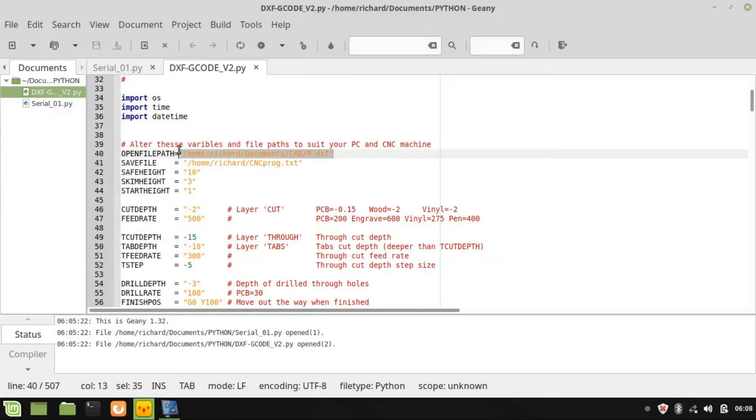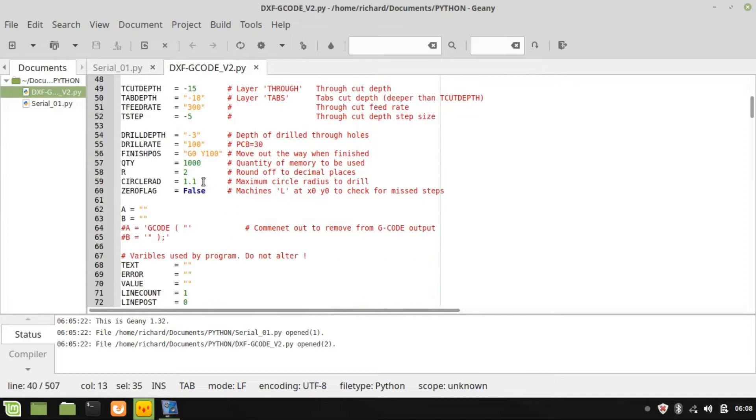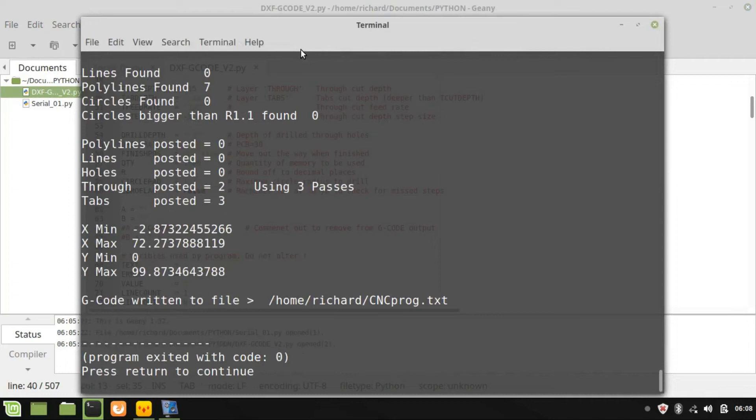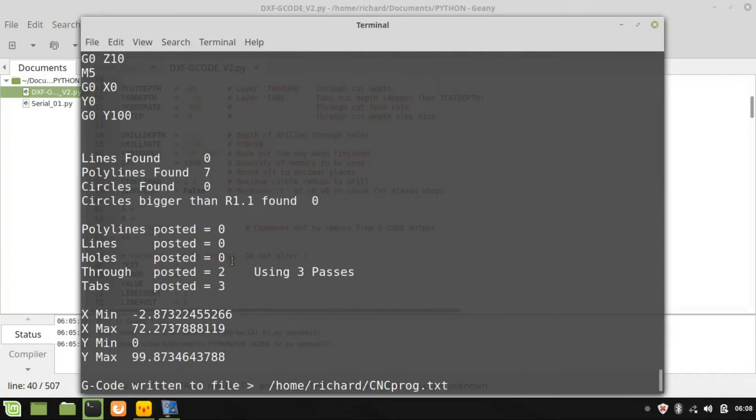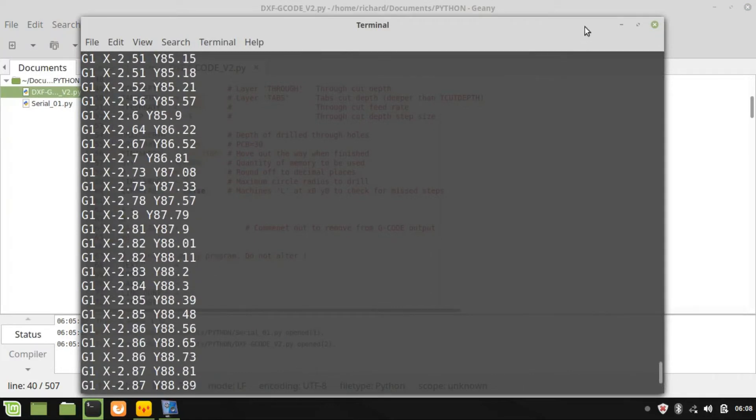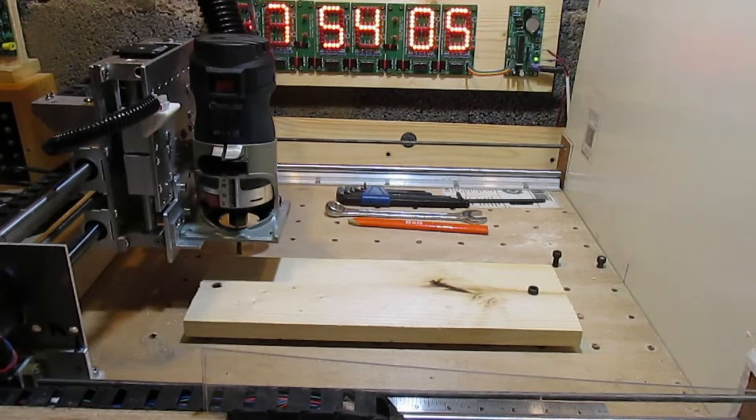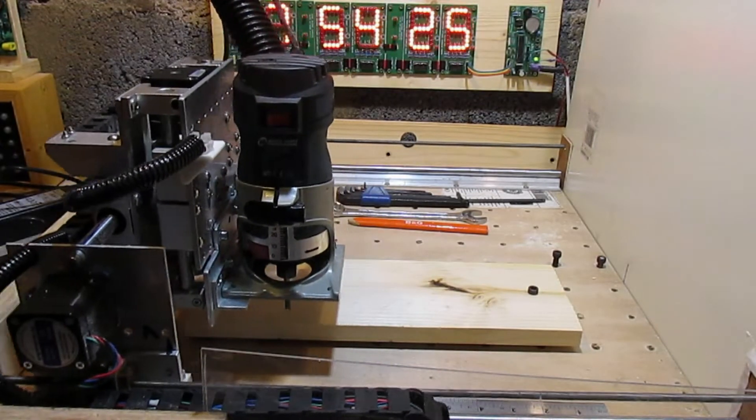Next, this DXF file is opened by some Python code that I have written using Genie. See my website for more details. You can set the file paths, feeds and speeds, and cut depths here, then run it to generate a report and the g-code required for the CNC machine to use. So let's run the machine.